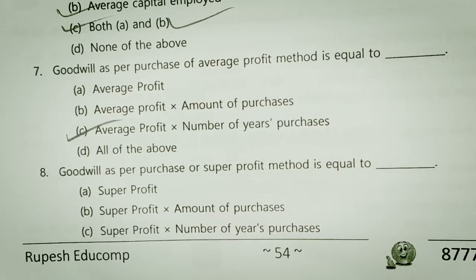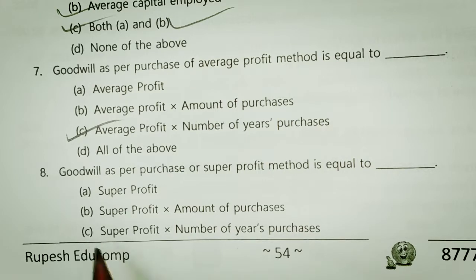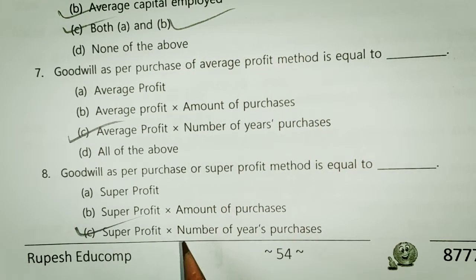Goodwill by purchase — super profit method is equal to: super profit, super profit multiplied by the amount of purchase, or super profit multiplied by the number of years of purchase.